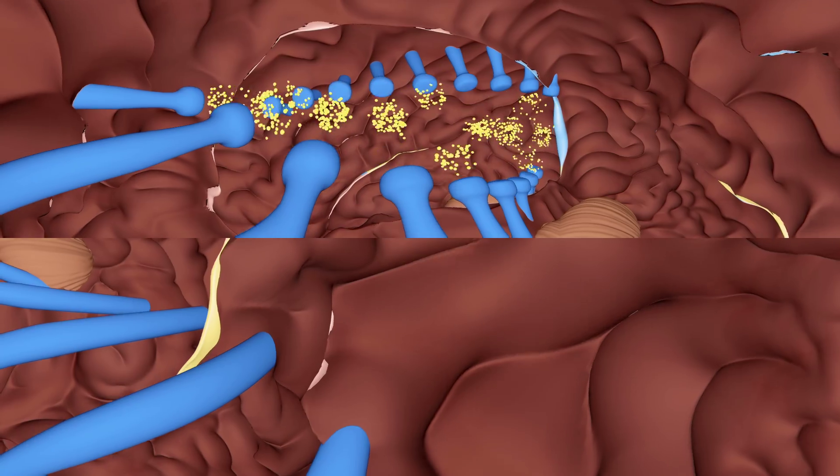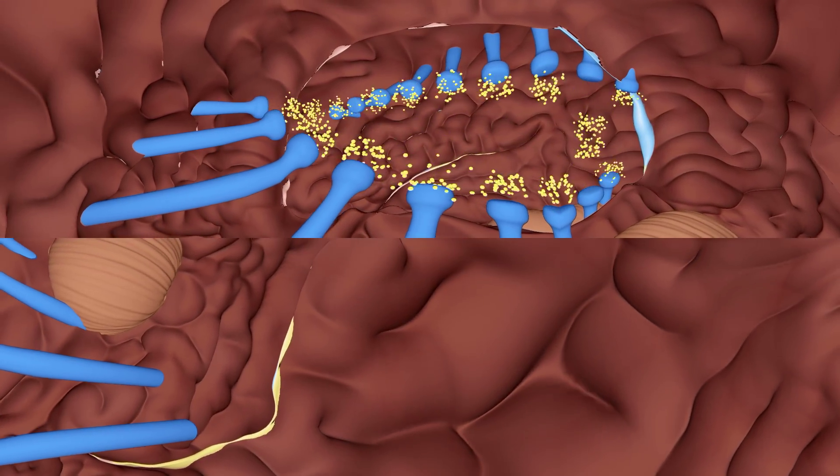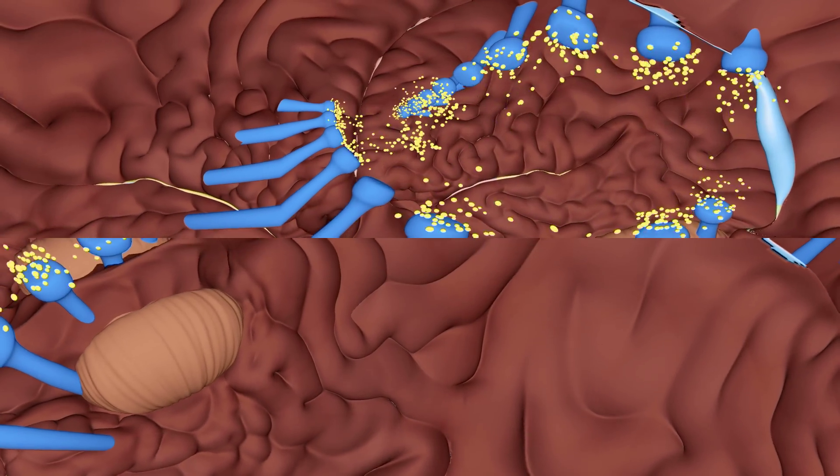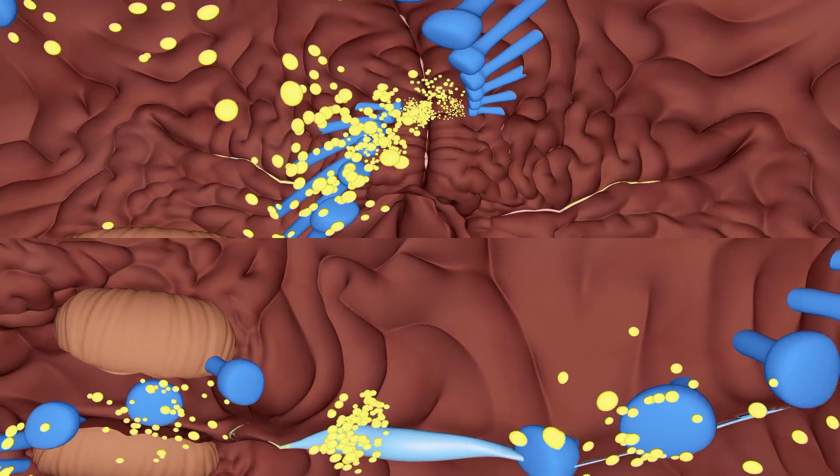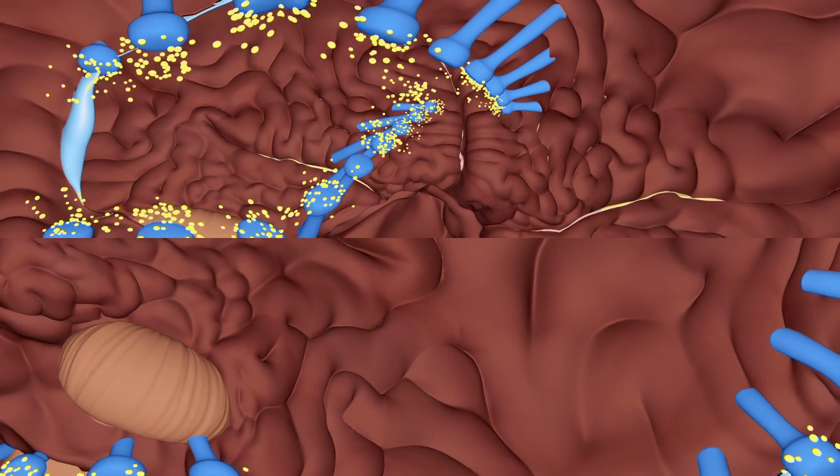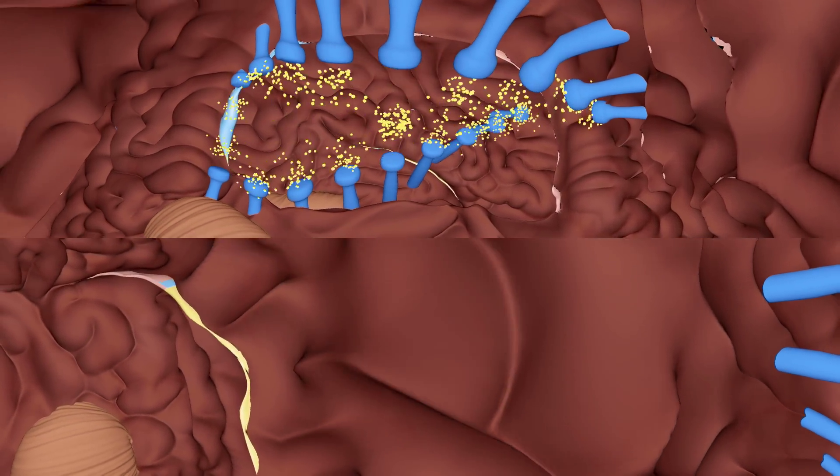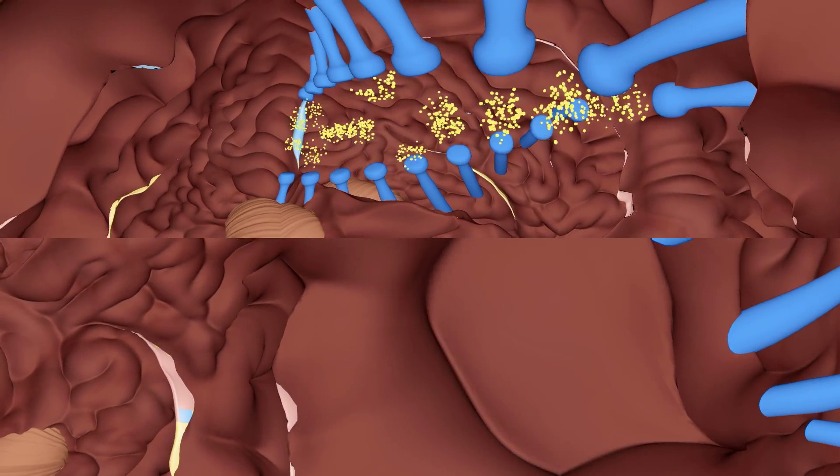As we can see, Wernicke's area and Broca's area are active right now. Both of them are located in the left hemisphere of the brain and participate in the speech function. Wernicke's area is responsible for understanding speech, and Broca's area is responsible for reproducing speech. Also, it controls the muscles of the face, tongue, and throat. I guess the guy is explaining why he is late to his boss.